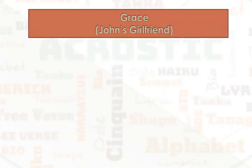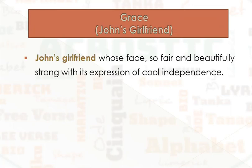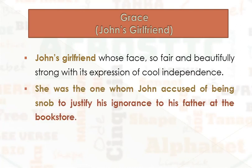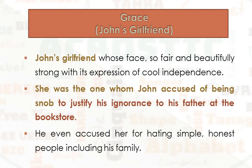Now we have Grace, John's girlfriend. She is John's girlfriend, whose face was so fair and beautifully composed with an expression of cool independence. She was the one whom John accused of being a snob to justify his ignoring his father at the bookstore. He even accused her of hating simple, honest people, including his family. John is aware of his lovely family and their characteristics — they are simple, honest people, in spite of the shabby clothes that his father wears.